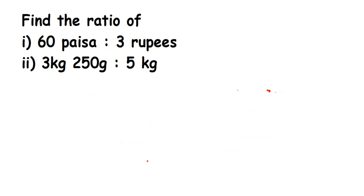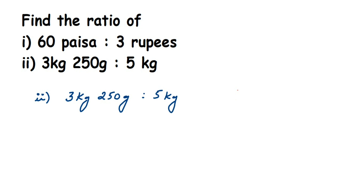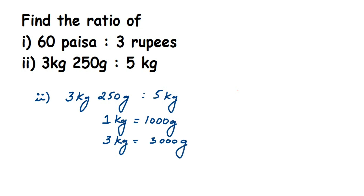The answer to the first question is 1 is to 5. Now for the second question, we have 3 kg 250 grams is to 5 kg. I mentioned I'm going to convert everything into grams, because converting grams into kg means you divide and get a decimal — I want to avoid that. We know 1 kg is equal to 1000 grams. So 3 kg will be 3 into 1000, which is 3000 grams. Therefore, 3 kg 250 grams equals 3000 plus 250, which is 3250 grams.